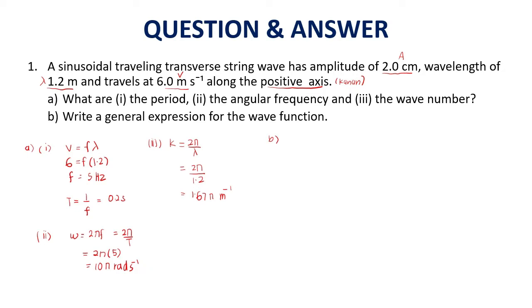Question B, write general expression for the wave function. The general one is Y equals A sine(ωt - kx). Why minus? Minus here means to the right. If it goes to the left, positive. Your A is 2, and then sine(10πt - 1.67πx), where Y is in cm, X in meters, and T in seconds. That's it for this question.